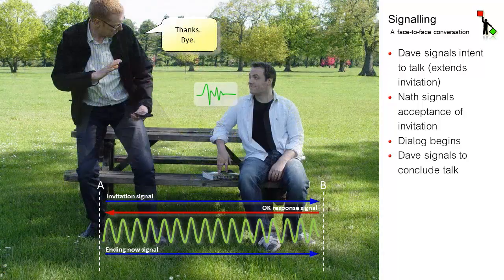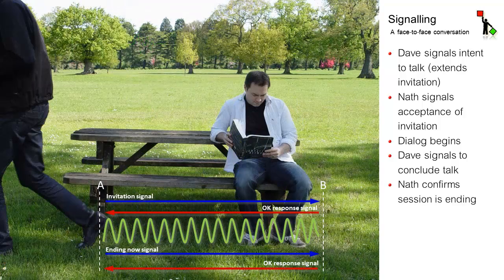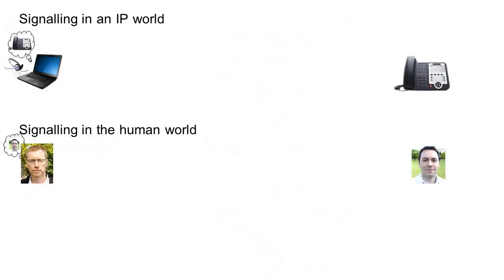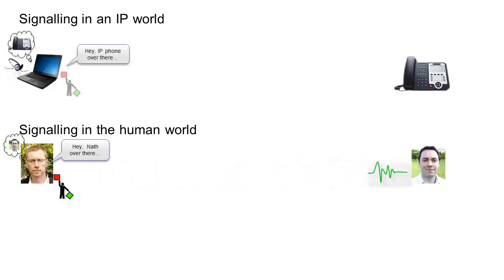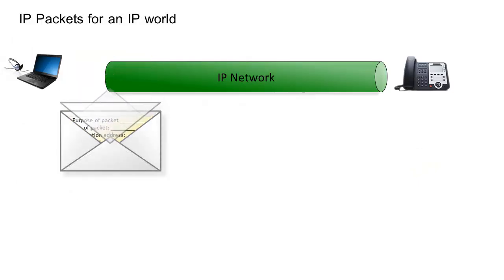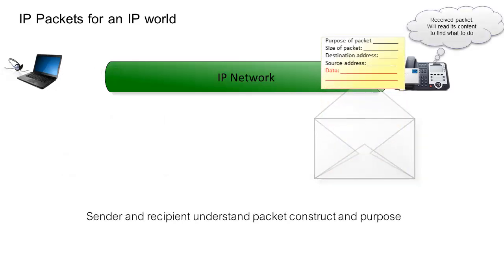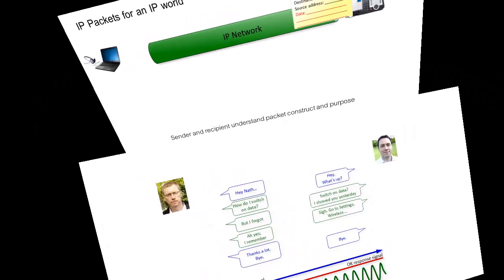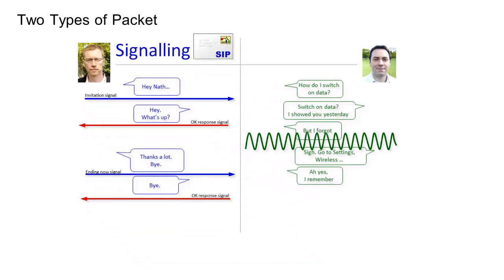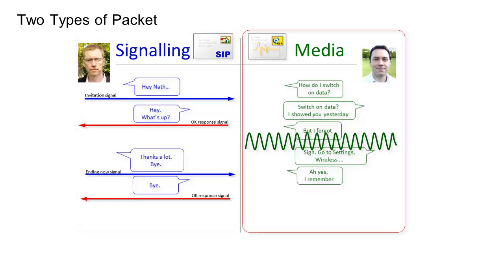Conversation complete, Dave issues another signal to end the session, and Nathan signals back confirming he knows the session is ending. Signaling in an IP world follows the same principles. Instead of signaling with an audio wave through the air, IP devices signal with IP packets over the IP network. There are lots of different types of IP packets, each with their own function and content. In IP communications, there are two types: signaling packets to establish or set up the session, and media packets to convey the audio, video, whiteboarding data, and so on.